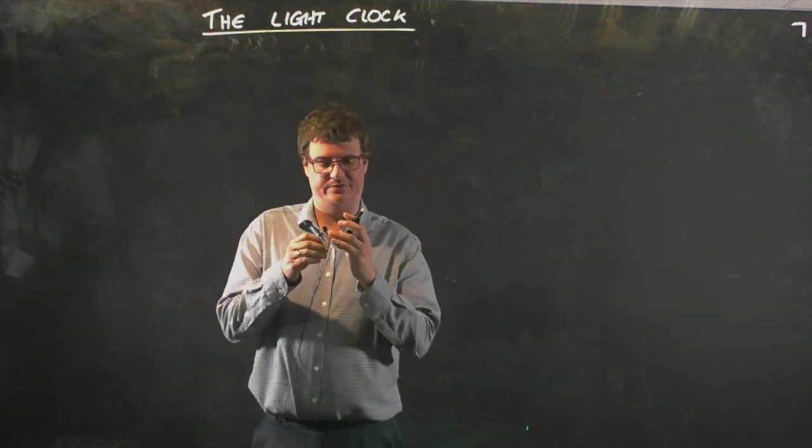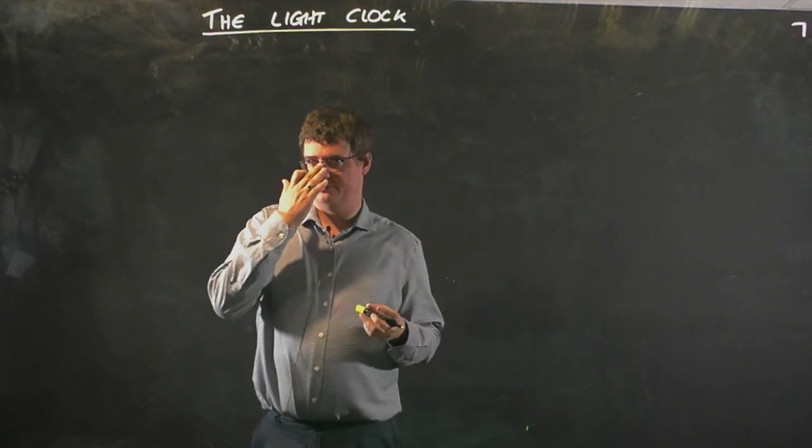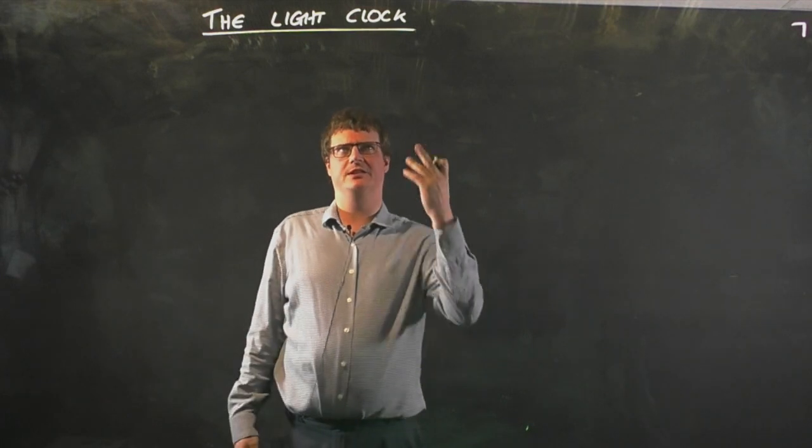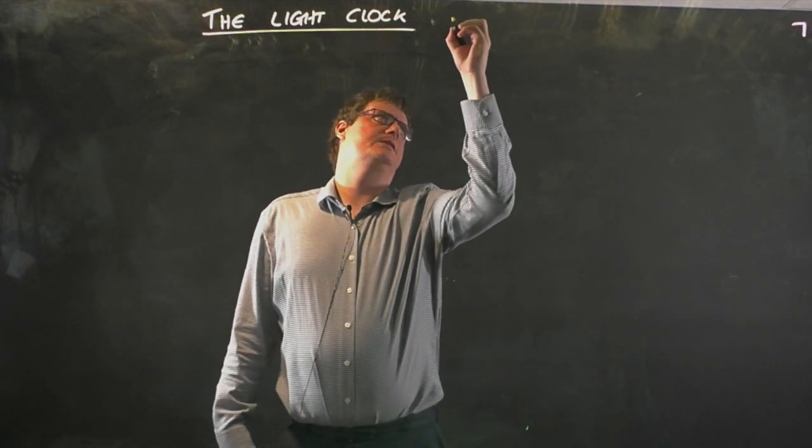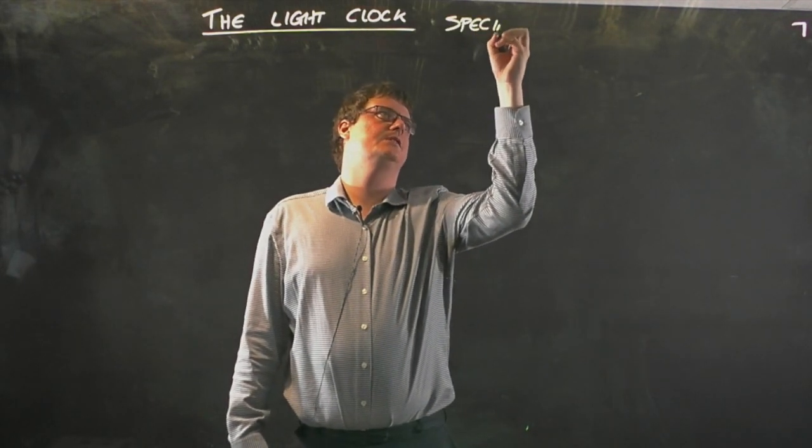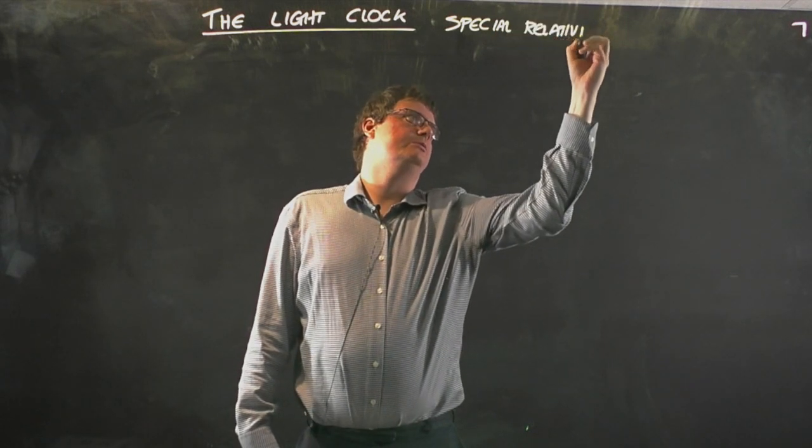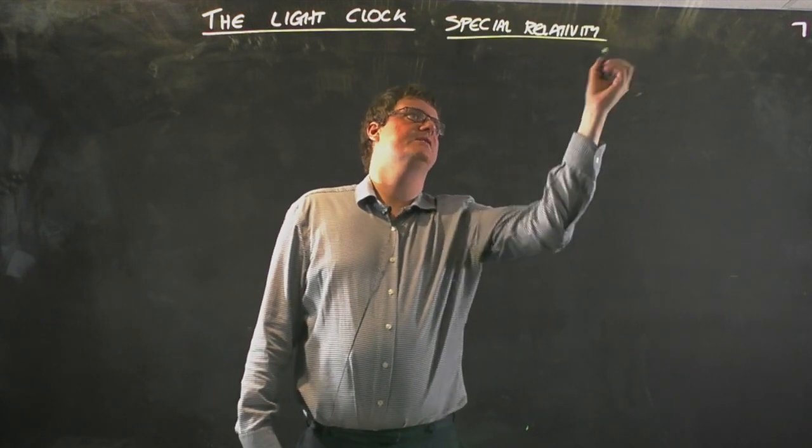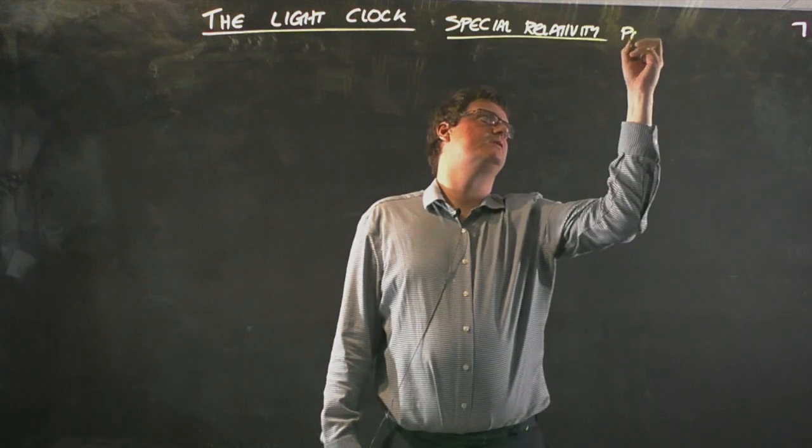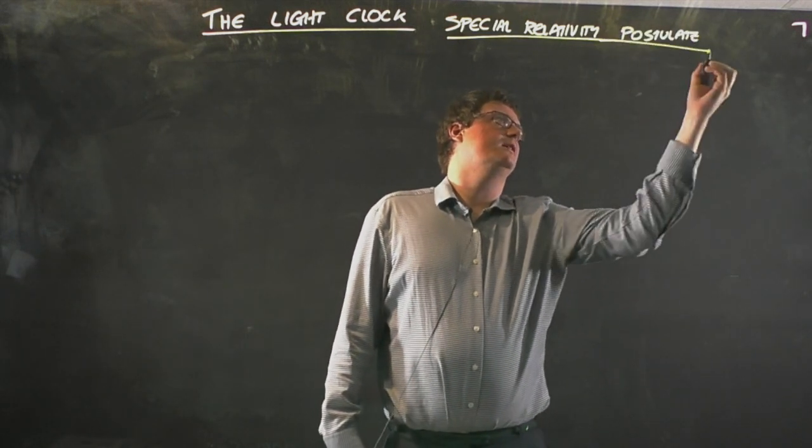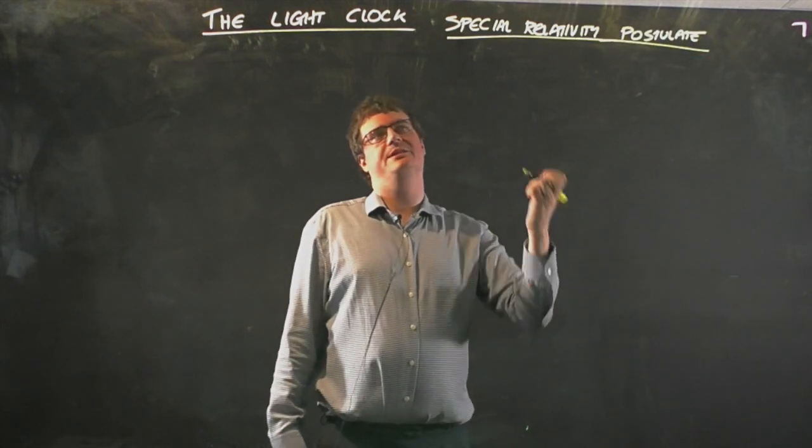Let's talk about special relativity and one of the go-to thought experiments in special relativity: the light clock. The first thing is in special relativity there are two basic assumptions of the system called the postulates. A postulate is an underlying assumption: let's assume this and then see what happens.